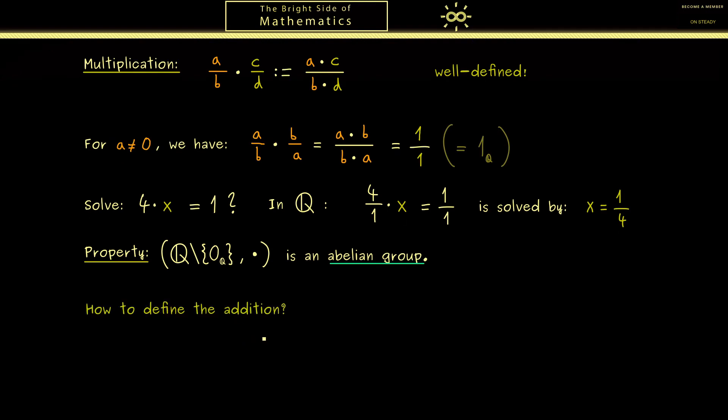Therefore it would be nice to translate this also for the rational numbers. Hence the question now is how do we define the addition operation for the rational numbers? Of course we still want to conserve the rules we had for the integers, in particular the distributive law.